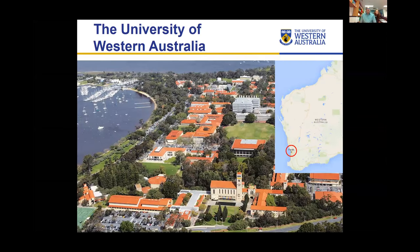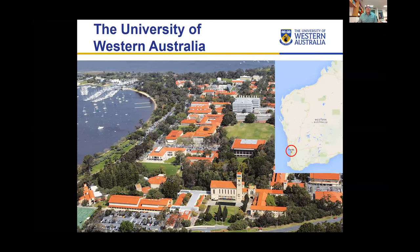So those who haven't been to the University of Western Australia, this is the campus where we are — a beautiful campus, so please do come to Perth. It's a comprehensive university with an internationally recognized reputation, first in Western Australia and in the top 100 globally according to rankings. More importantly, it has well-established industry partnerships and is a member of the Group 8 universities. There are 40 universities in Australia. The Group 8 does 70% of the research in Australia across all kinds of research, not just agriculture alone.